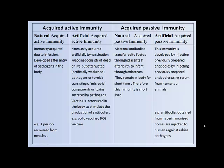In acquired passive immunity: natural acquired passive immunity is due to maternal antibodies transferred to the fetus through the placenta after birth. In artificial acquired passive immunity, this immunity is developed by injecting previously prepared antibodies using serum from humans or animals. Example: antibodies obtained from hyper-immunized horses are injected into humans against the rabies pathogen.